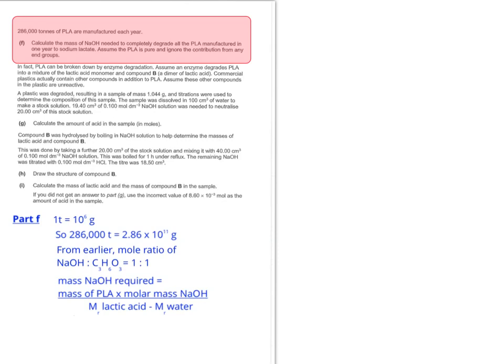So to get the mass of sodium hydroxide required, you multiply the mass of PLA that you've got times the molar mass of NaOH, and then you divide that by the MR of lactic acid minus the water that is lost. So if we type those numbers into our calculator, that gives us 1.59 times 10 to the power of 11 grams or 159,000 tonnes, both answers to 3 sig figs.